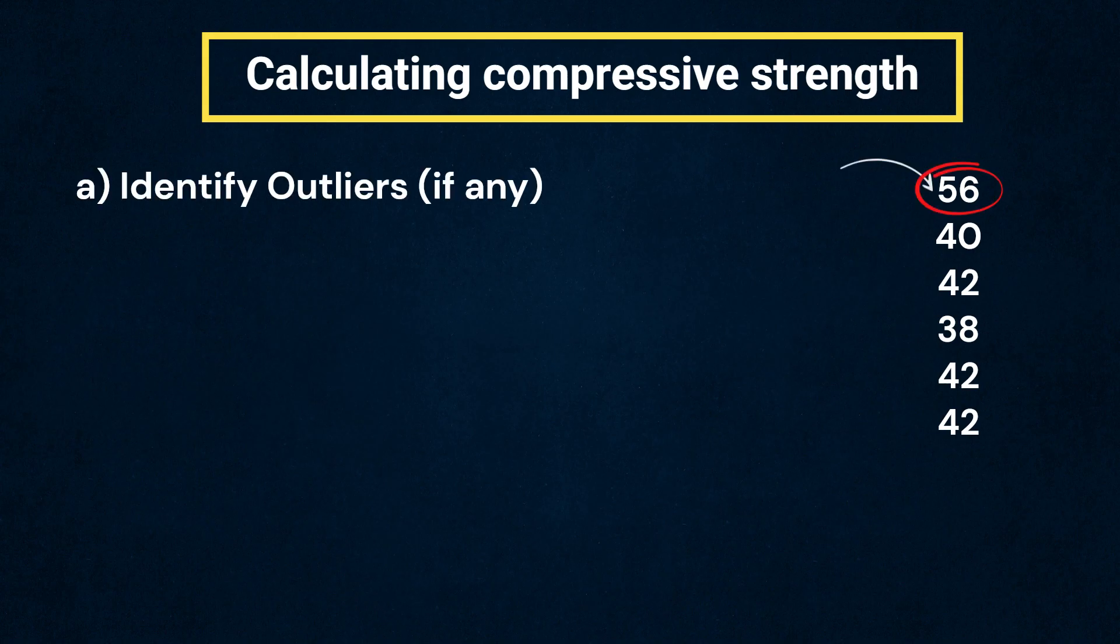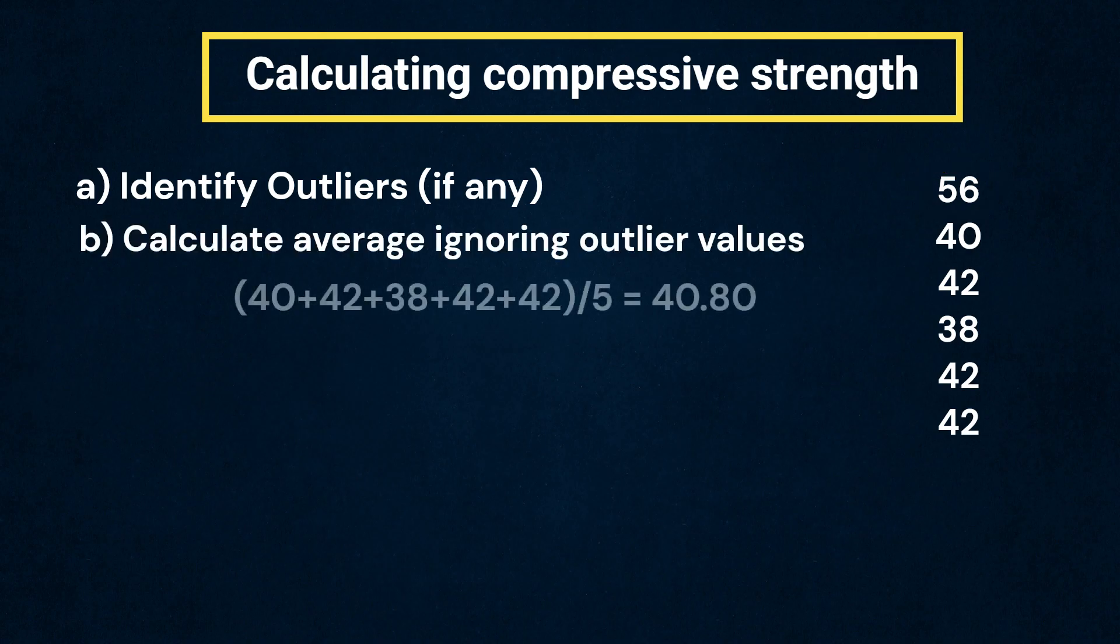Next, calculate the average of the rest of the readings to get the average rebound index.